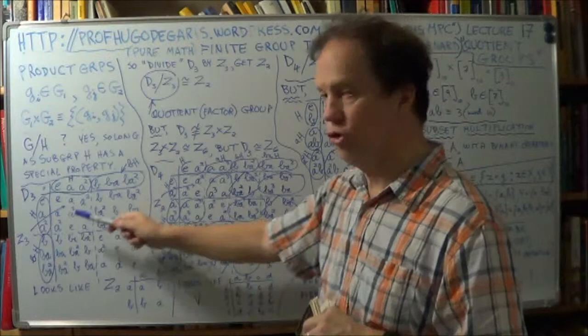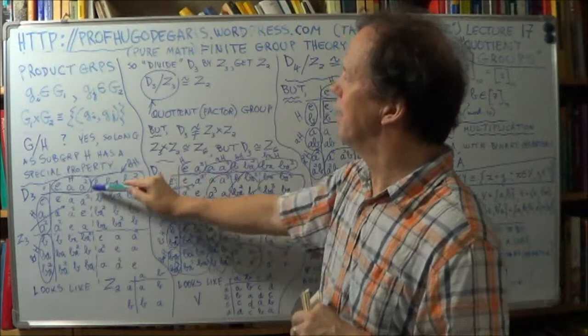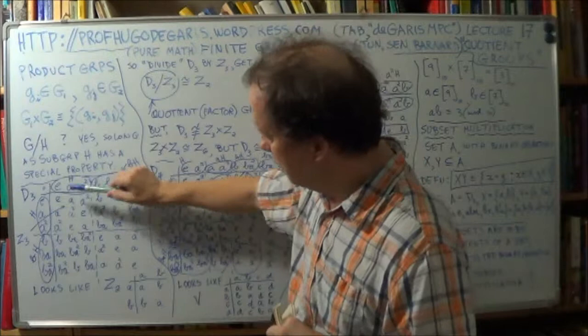Okay? And look at what you get. These are like the entries in the group table, under these coset members of your group D3, right?